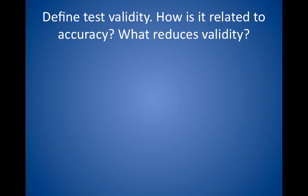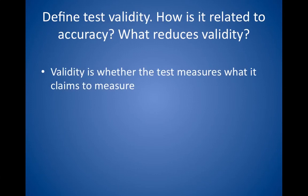Define test validity. How is it related to accuracy? What reduces validity? Practically speaking, the validity of a test is synonymous with its accuracy. Validity measures the trueness of measurement — in other words, whether the test measures what it claims to measure. For example, if you give a valid IQ test to a genius, the test should not indicate that he or she is mentally challenged. Systematic error reduces validity and accuracy — for example, when the equipment is miscalibrated.